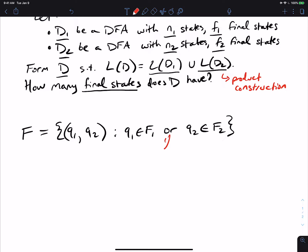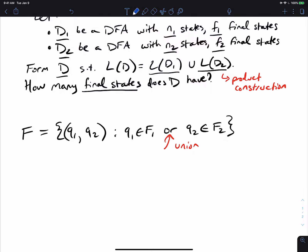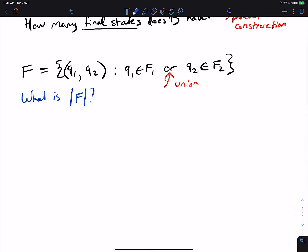or Q2 is a final state of the other one. And we have an or here because we have union. So now all that we are really needing to do here is what is the cardinality of this set of final states? How many final states are in here?